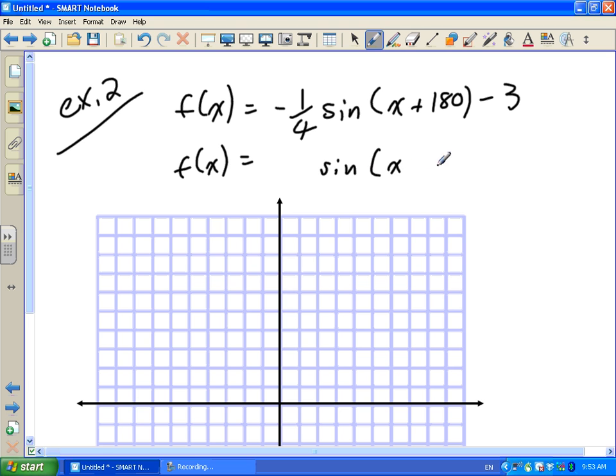So our theoretical model is normally like this, where we have our A, H, and K. If you guys notice, K is negative 3, H is plus 180, and A is negative 1 quarter.